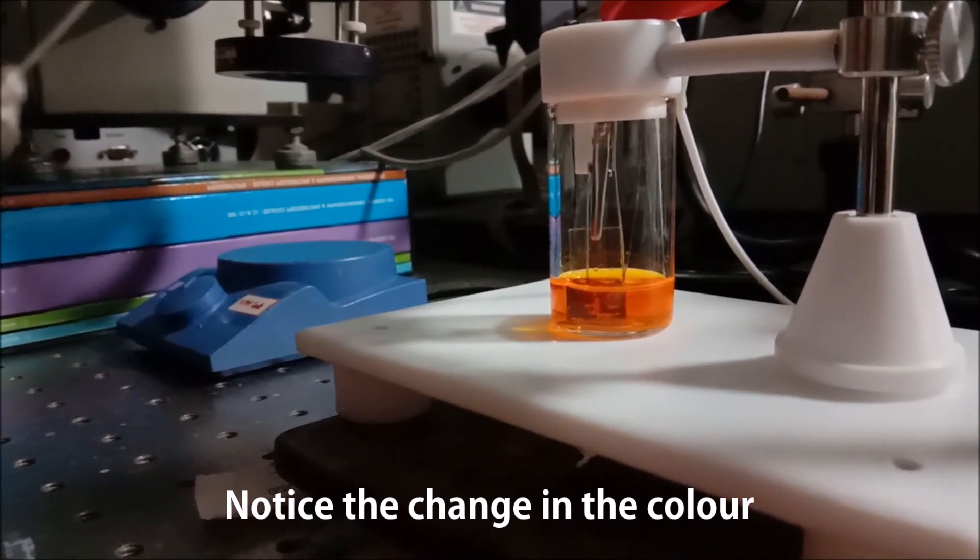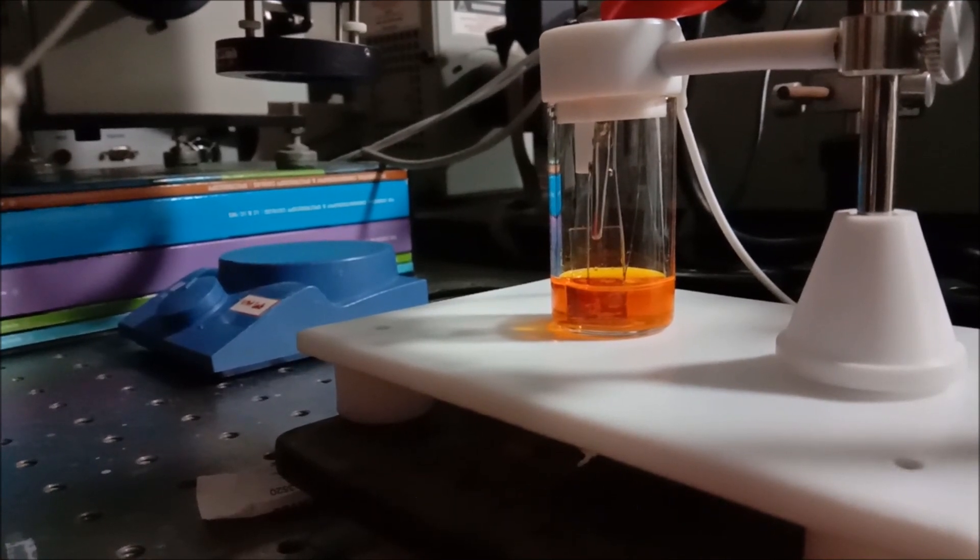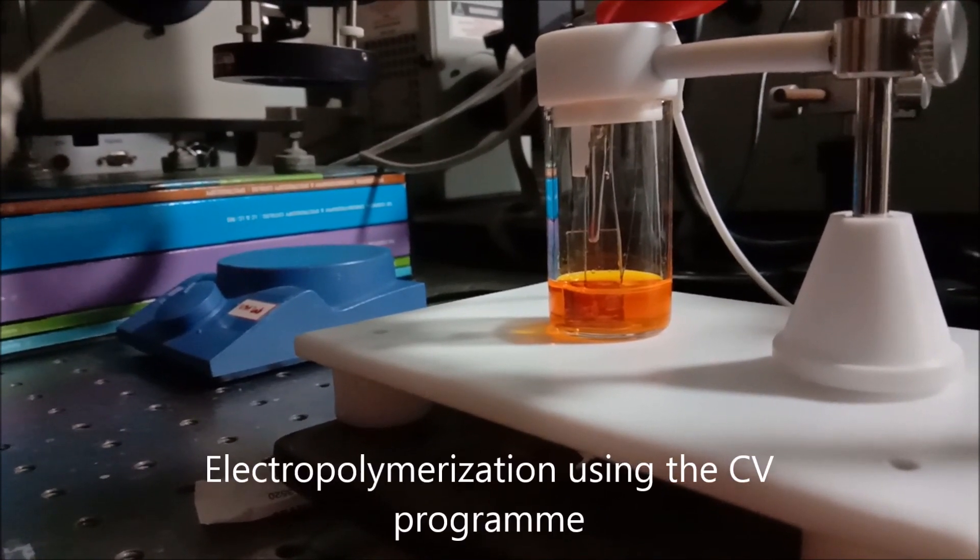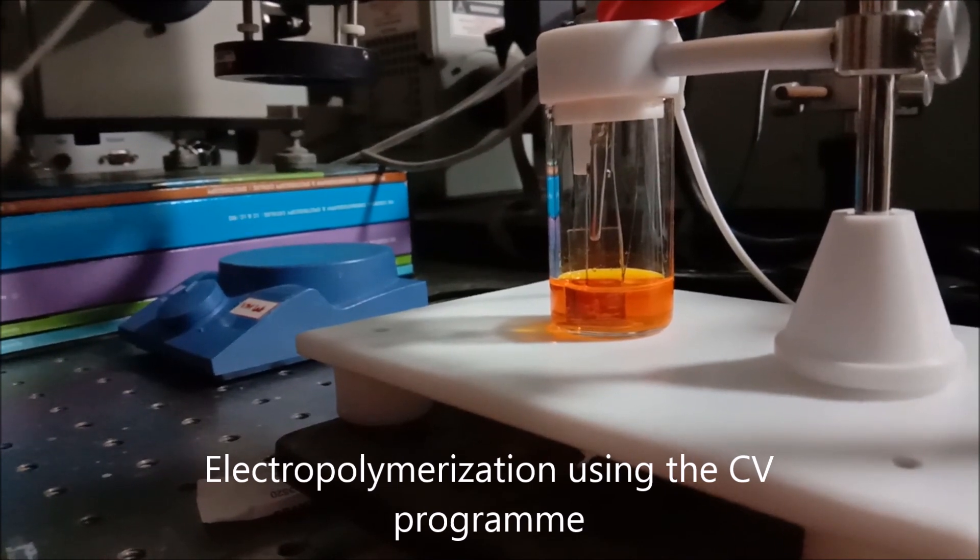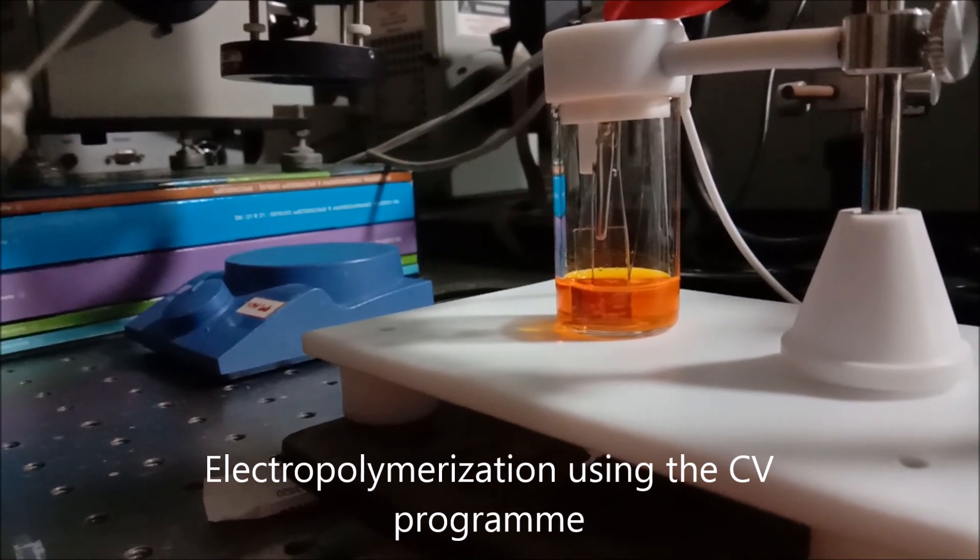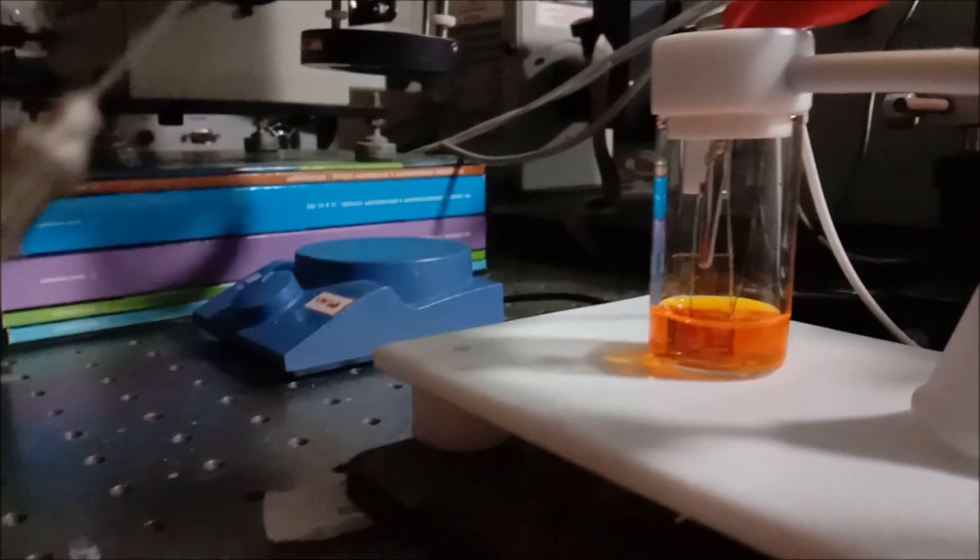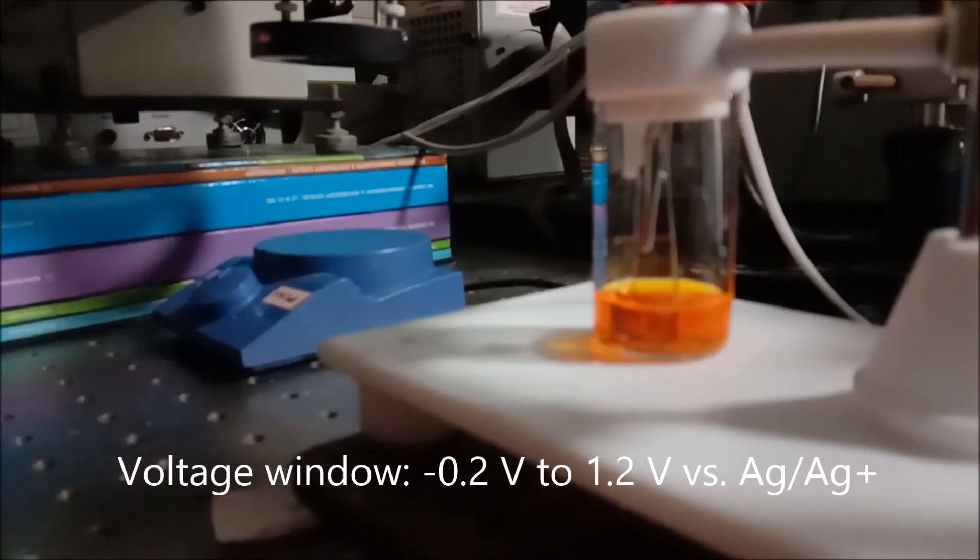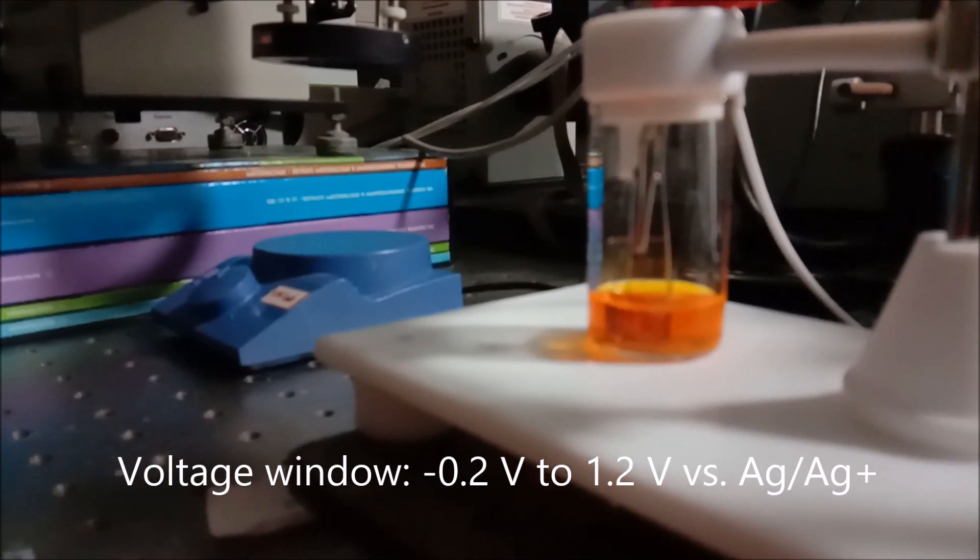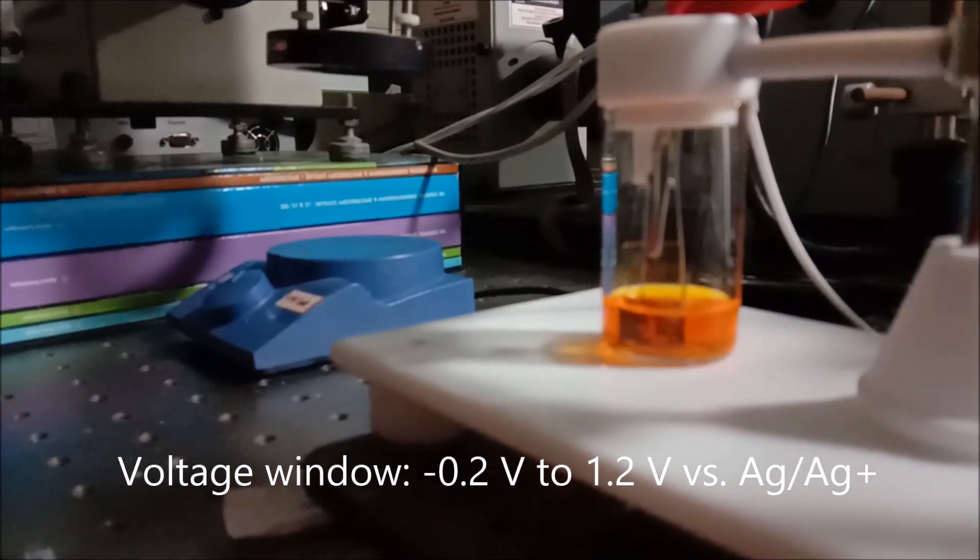We are doing electropolymerization on FTO substrate. Obviously I can't reveal the material here. However, interestingly you can see that the blackness of the material being deposited on the FTO substrate immersed in the electrolyte is increasing at a particular moment and then it is fading away.